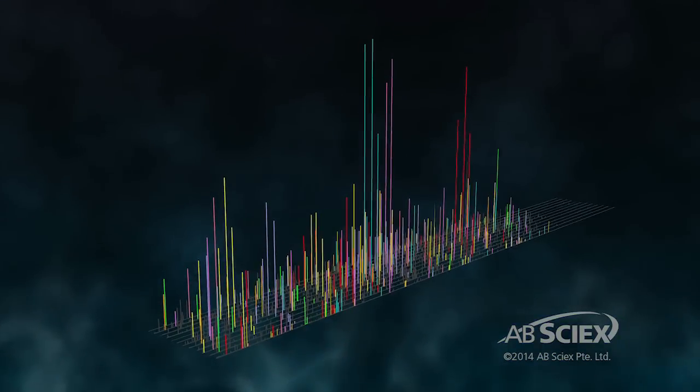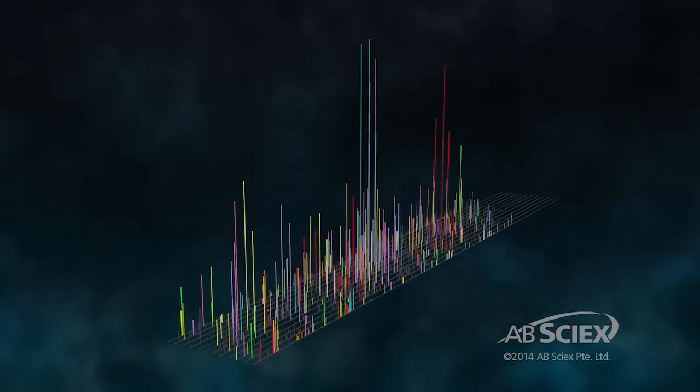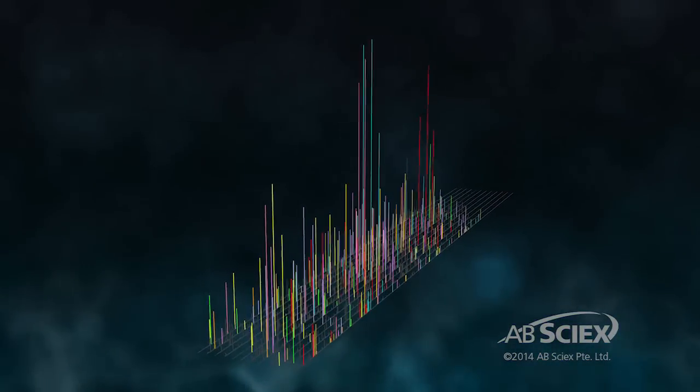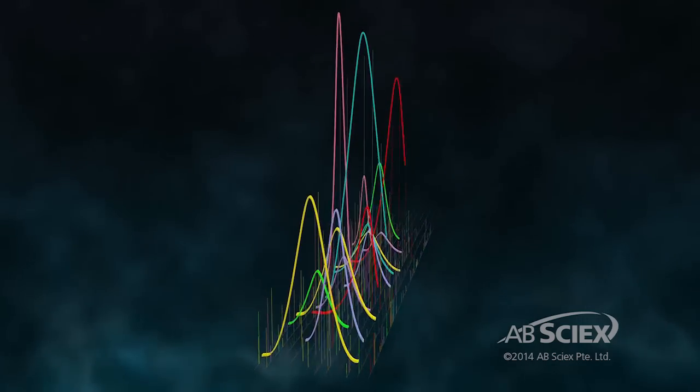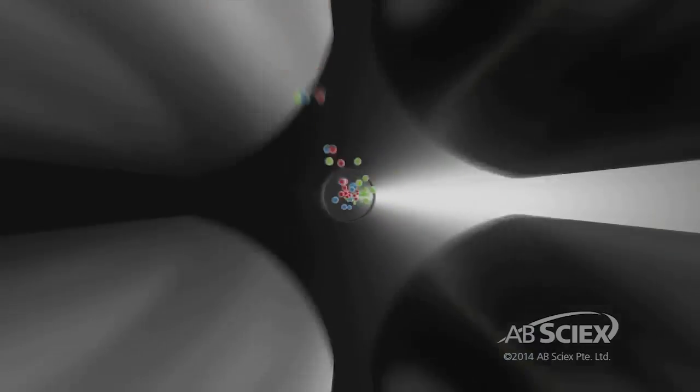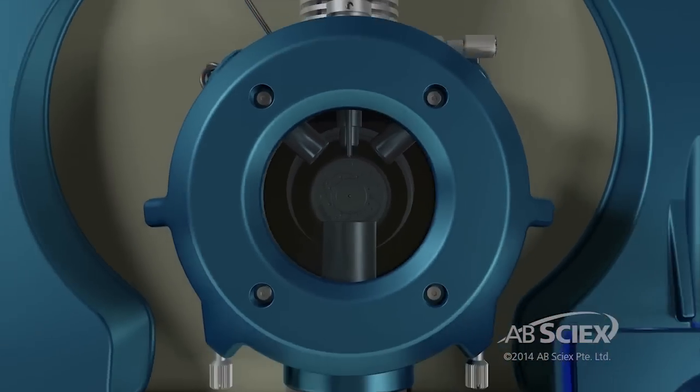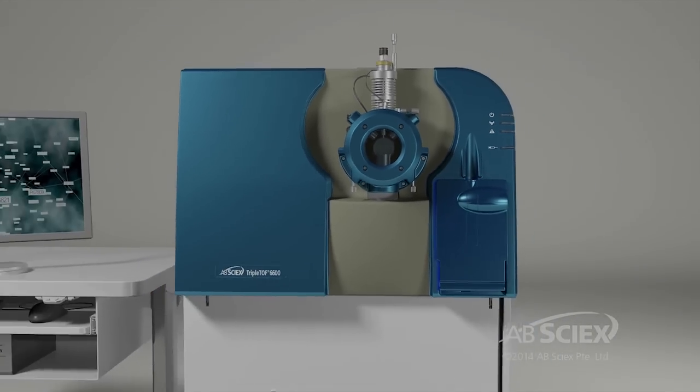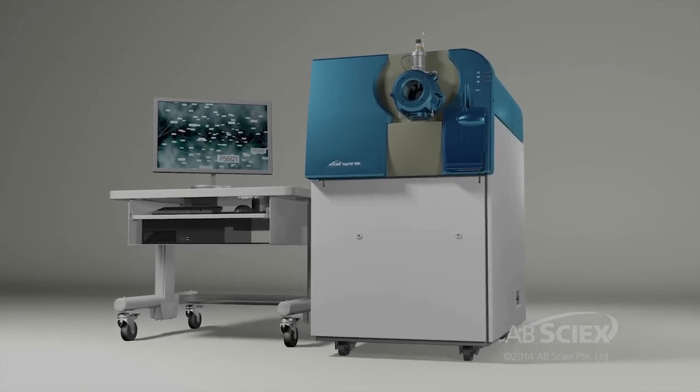SWATH takes advantage of the fast scanning speed of our triple-TOF instruments. Acquiring MS-MS spectra on all precursor ions within a specified mass range creates a digital record of the samples, which means as your biological hypothesis changes, the data can be interrogated over and over again.